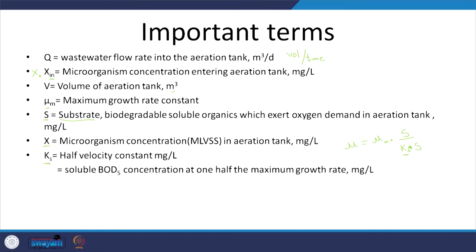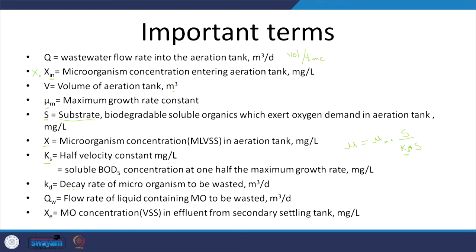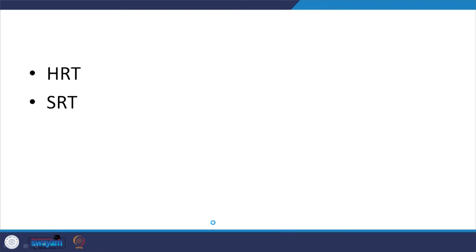K_s is equal to one half the maximum growth rate. There is also the decay rate, because microbes decay. The concentration of X in the effluent from the secondary tank and the concentration of microbes in the sludge being wasted or recycled are also key variables.